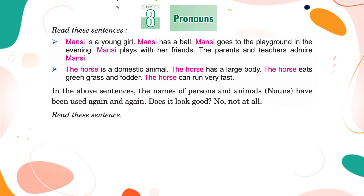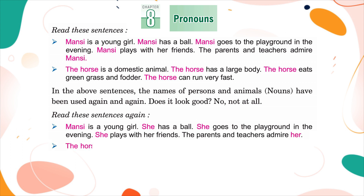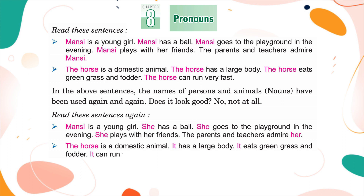Read these sentences again. Mansi is a young girl. She has a ball. She goes to the playground in the evening. She plays with her friends. The parents and teachers admire her. The horse is a domestic animal. It has a large body. It eats green grass and fodder. It can run very fast.